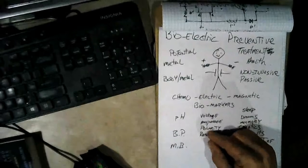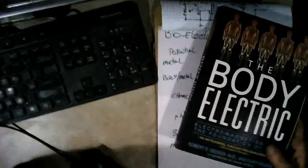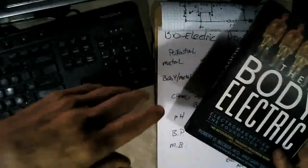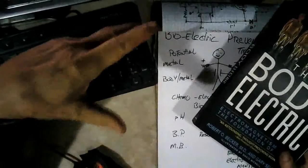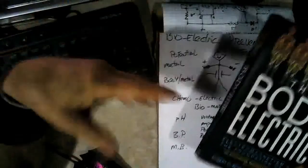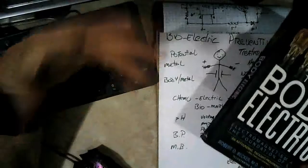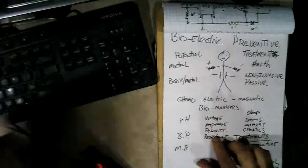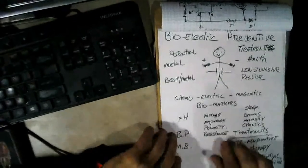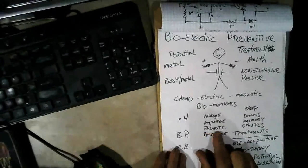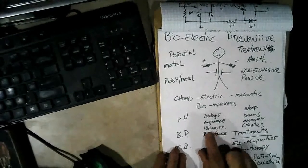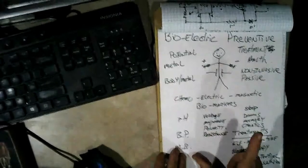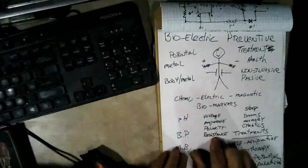Now the same thing with polarity. Becker, one of the things that he discovered was that when your body gets injured, it temporarily reverses the polarity around the injury until the injury starts to stimulate the healing response in the body, and then it switches back to its normal polarity again. So you can measure polarity on different places of the body, and you should be able to tell from those polarity measurements where the potential problem areas in the body is.